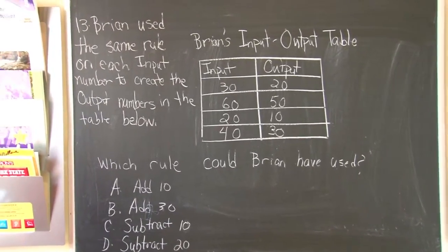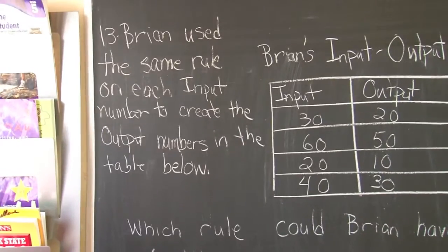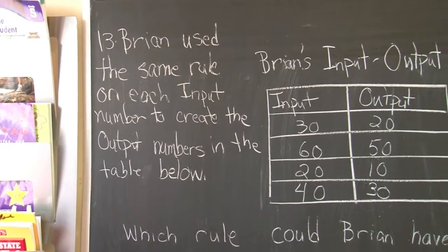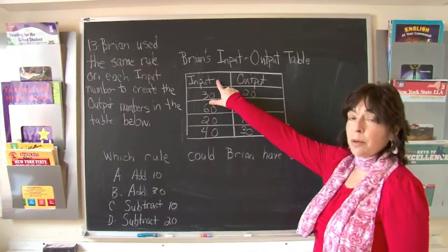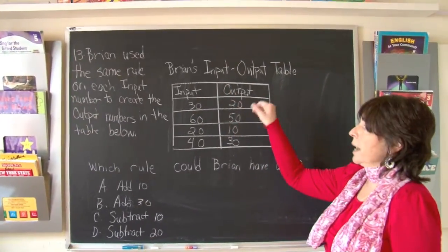Brian used the same rule on each input number to create the output numbers in the table below. Let's take a look at Brian's table. The input, the number he put in, and what came out, the output.